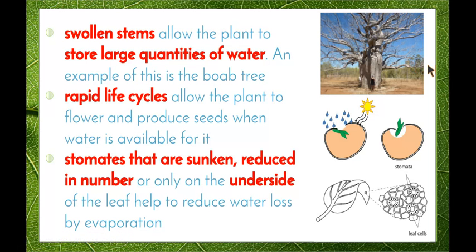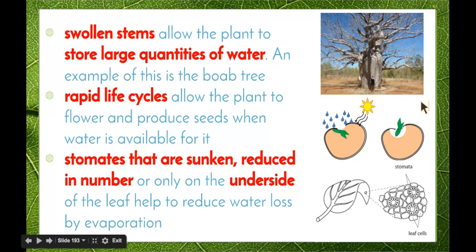Rapid life cycles are another adaptation, allowing the plant to flower and produce seeds when water is available. Seeds won't germinate unless there's water available, so some Australian plants have the ability for seeds to remain dormant until there's enough water for germination to occur.